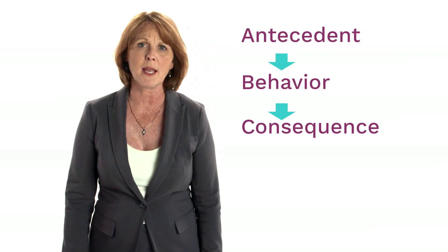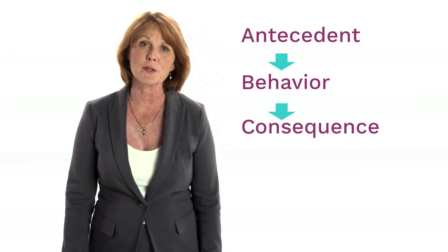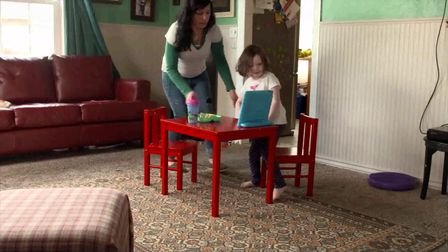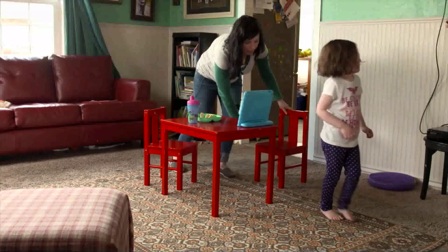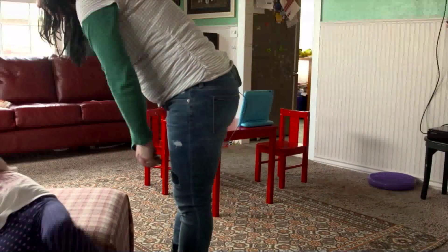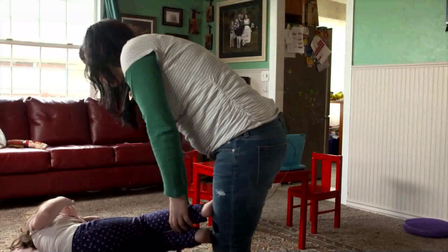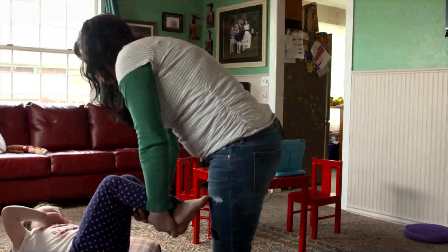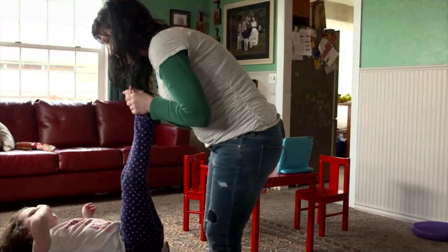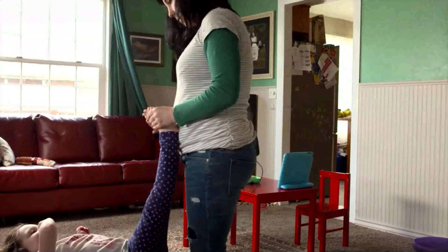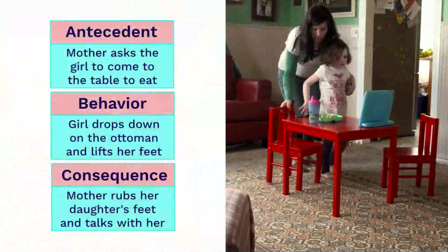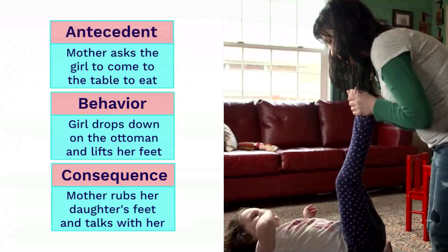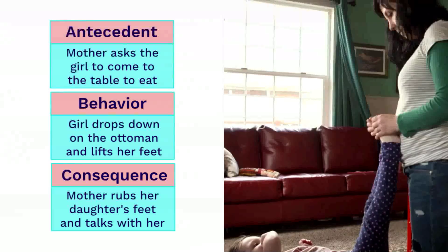Let's watch some footage of behavior and see how ABC recording works. The mother asks the girl to come to eat. Instead, she drops down on the chair and lifts her feet. Her mother rubs them and talks with her.